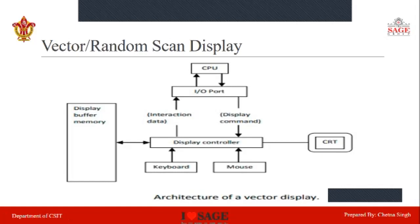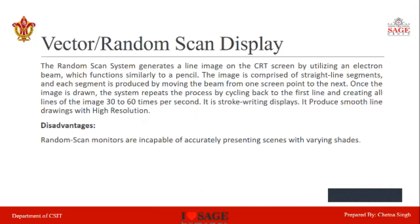Vector scan display is generally used for higher resolution. Vector scan display produces smooth lines and needs less memory to store the picture definition. However, there are disadvantages: random scan display cannot draw realistic images, and there is a limitation on colors — it can display a maximum of 4 colors — and color depth depends on how deep the beam penetrates the phosphor screen.